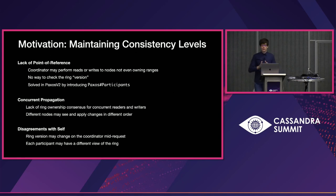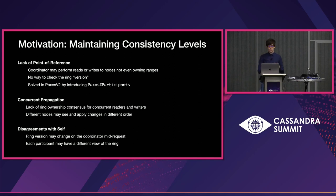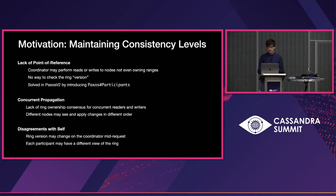This applies not just to Paxos but to eventually consistent operations as well. Coordinators and replicas should agree about the view of the ring, and we should have mechanisms that allow lagging participants to quickly catch up to the latest epoch. We would like ring consistency for the duration of every operation, meaning the version of the ring at the end of a read or write should be compatible with the responses the coordinator has collected from the replicas. All of this is required to maintain consistency levels honestly.